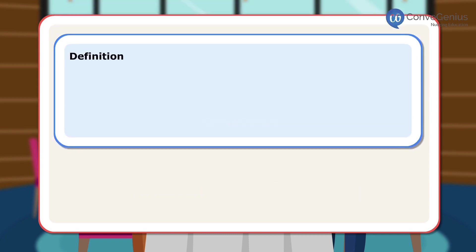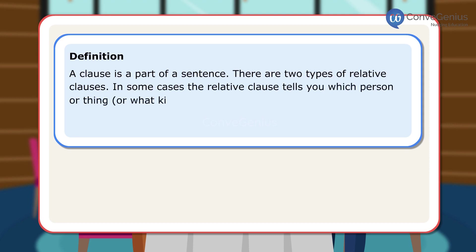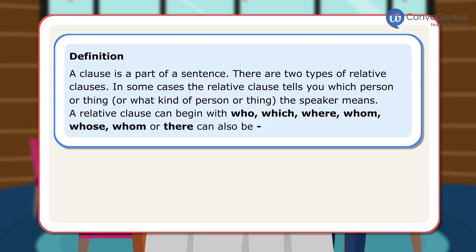Definition: A clause is a part of a sentence. There are two types of relative clauses. In some cases, the relative clause tells you which person or thing, or what kind of person or thing the speaker means. A relative clause can begin with who, which, where, whom, whose, or there can also be ING or ED clauses, etc.